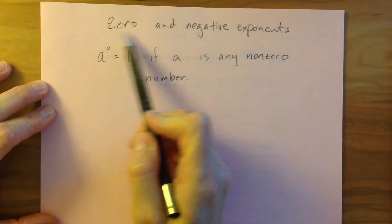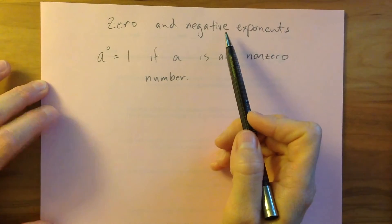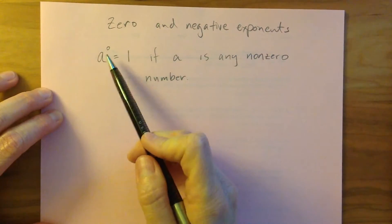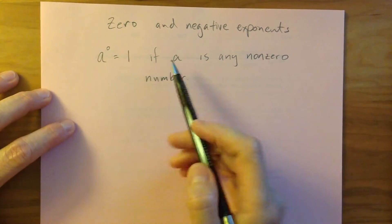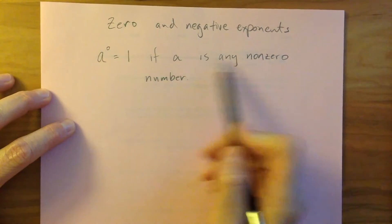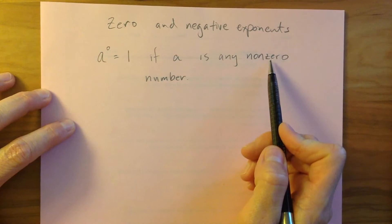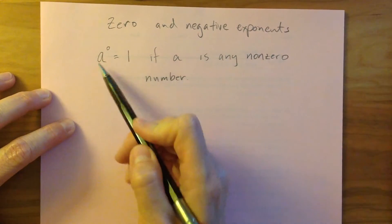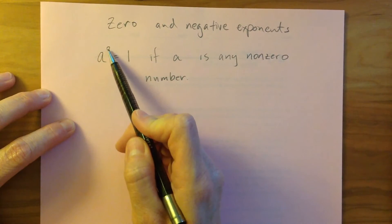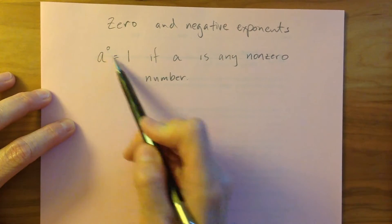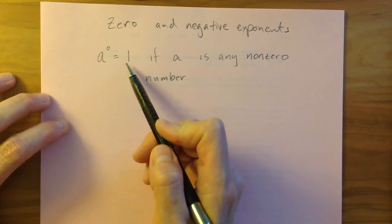In this video, I'm going to talk about zero and negative exponents. Let's start with the power of zero. If I have any number a, which is not equal to zero, and I take a and raise it to the power of zero, then my answer is going to be one.